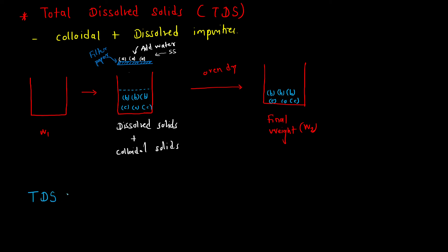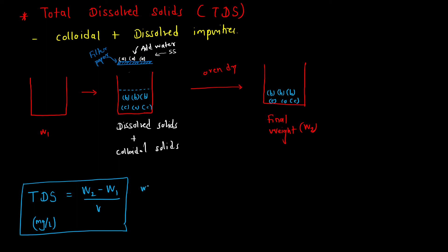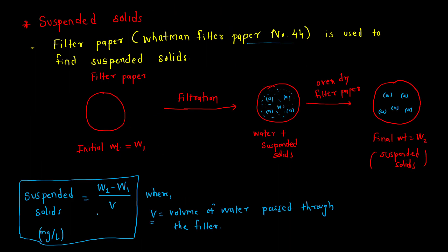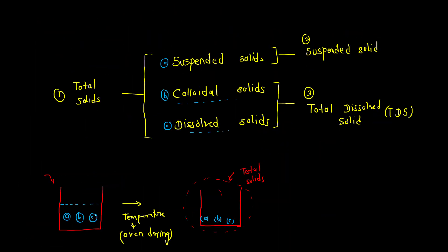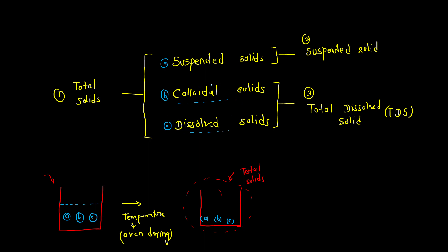Oven dry the container with the filtrate. The water evaporates and only (b) and (c) remain. This is the final weight W2. TDS = (W2 − W1) / V, expressed in mg/L, where V is the volume of water added to the filter. This is how we calculate total dissolved solids, suspended solids, and total solids.